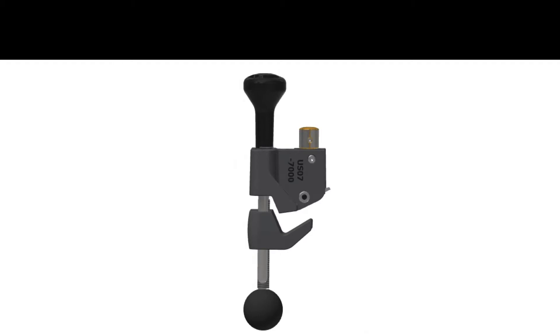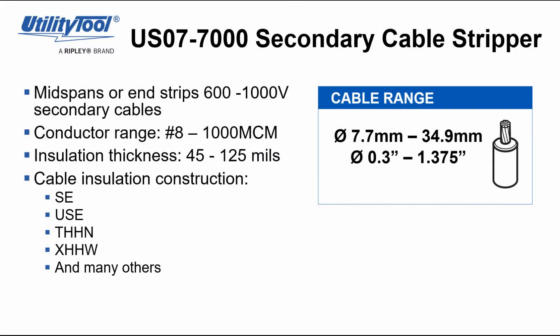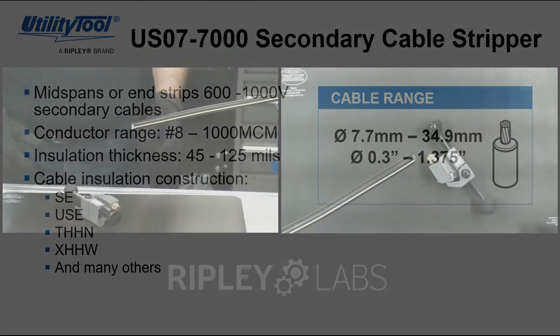The jaw is adjustable for diameters from 0.30 inches to 1.375 inches and the blade is adjustable for insulation thicknesses from 45 to 125 mils.